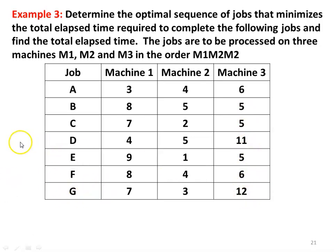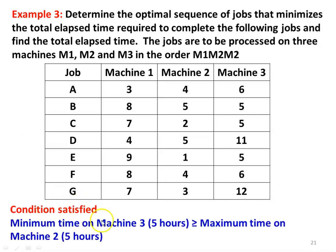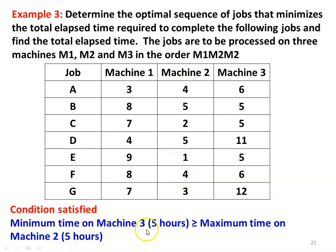We have to solve the problem to identify the total elapsed time and the optimal sequence. We verify the condition: the minimum time on machine 3 is 5, which is greater than or equal to maximum time on machine 2, which is also 5. So the second condition is satisfied and we can proceed to solve the problem.